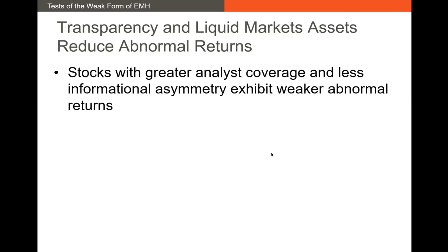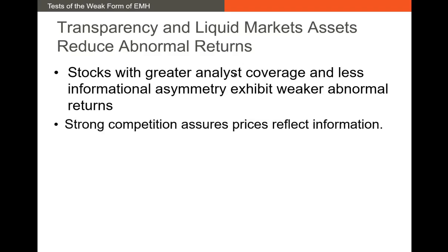So what else might reduce anomalous returns? Usually what we find in academic research is that stocks with greater analyst coverage — stocks like Apple and Google where there are 50 analysts covering the stock — tend not to experience as much of these anomalous returns. Greater information transparency weakens some of these anomaly returns. A lot of these anomalies only persist in the portfolio of stocks that really don't get covered by analysts.